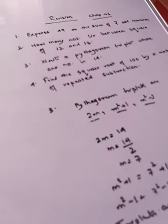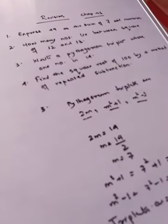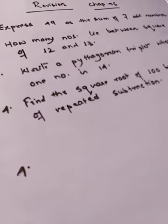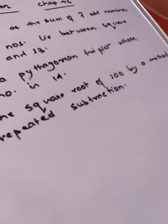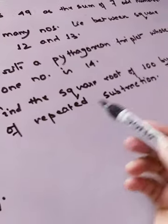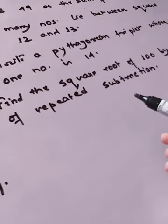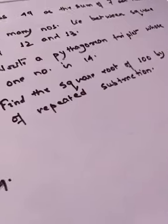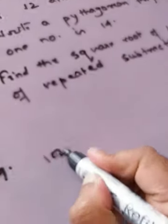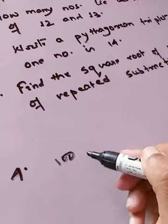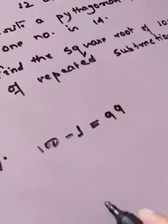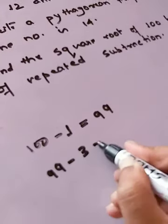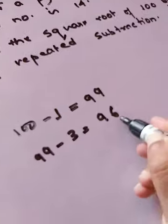Now let's see question number 4. We have to find the square root of 100 by the method of repeated subtraction. When it says repeated subtraction, every time we have to subtract consecutive odd numbers. The first odd number is 1, so 100 minus 1 equals 99. The next odd number is 3, so 99 minus 3 equals 96. Then minus 5 gives 91.